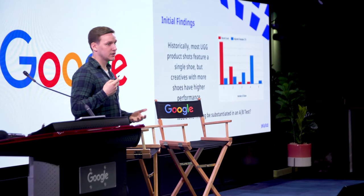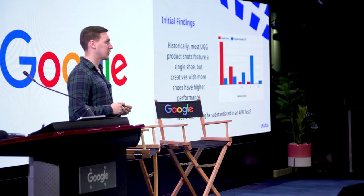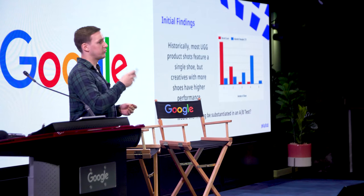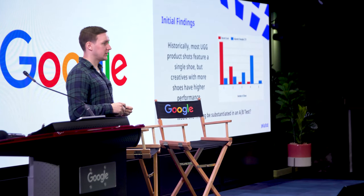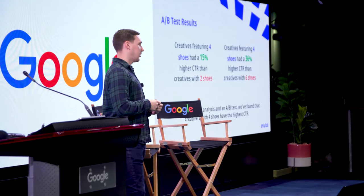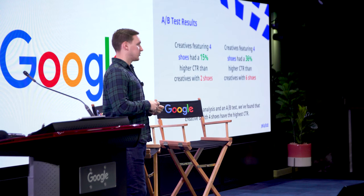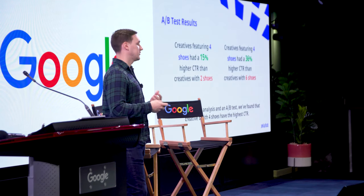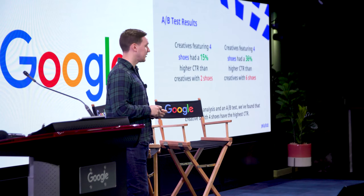To really prove out the efficacy of this, we thought it would be worthwhile to do an A/B test. So we ran an A/B test for two, four, and six shoes, collected data, and then analyzed the results. We found that four shoes had a 15% higher click-through rate than two shoes, and a 36% higher click-through rate than six shoes. This corroborates our initial findings and lends higher confidence to the overall creative intelligence product we're offering.